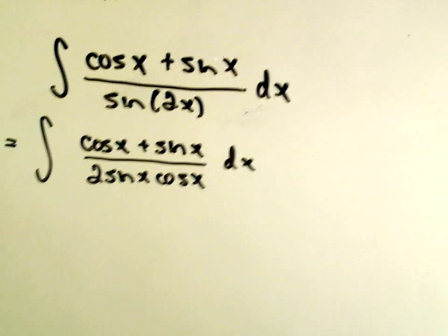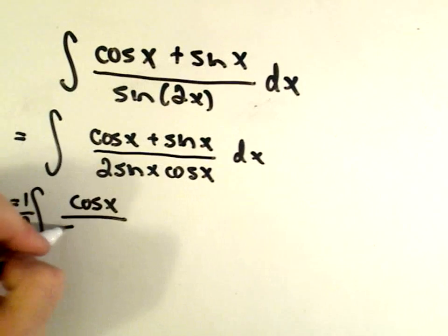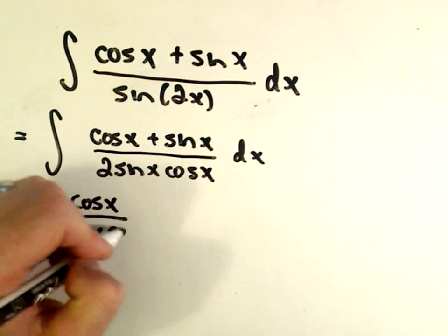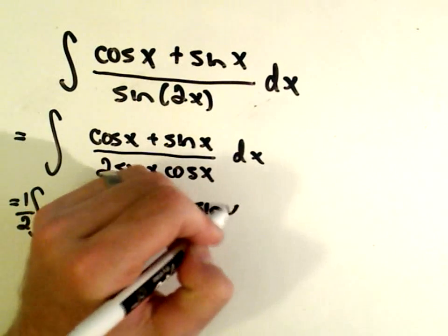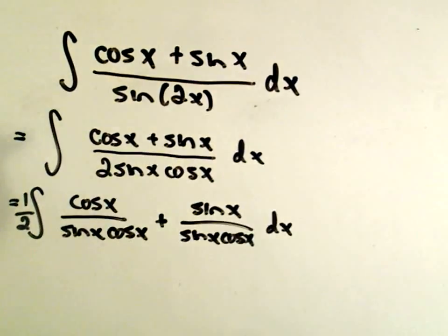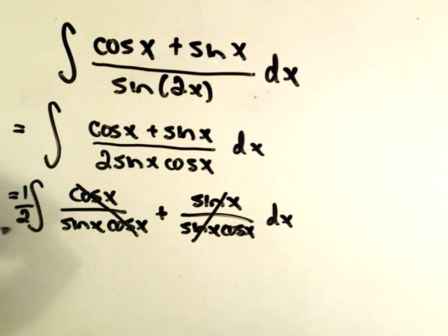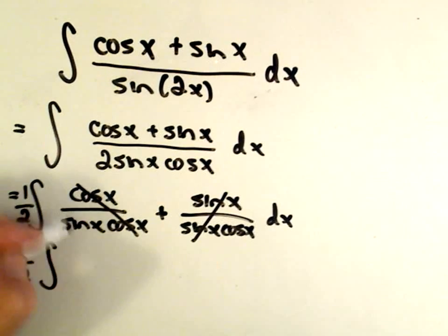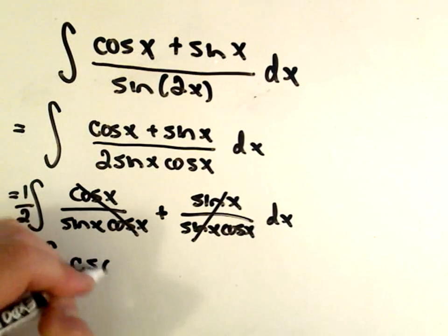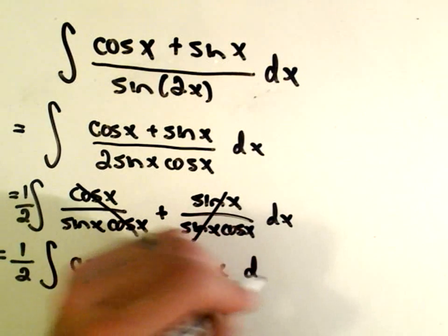And now I'm just going to do some algebra and bust up my fraction. So I can write this as, I can even factor the 2 out. Okay, so I'll put my 1/2 out front. But then I'll have cos x over sin x cos x plus sin x over sin x cos x dx. Well, the cosines are going to cancel out in the first part, the sines in the second. So I've got 1/2 the integral 1 over sine, but that's csc x, plus 1 over cosine, which is sec x dx.